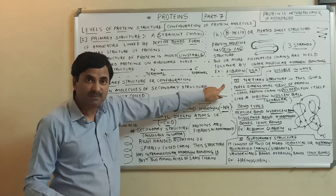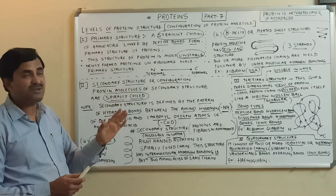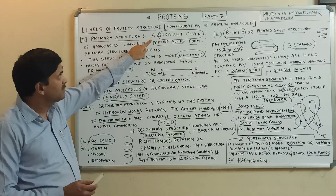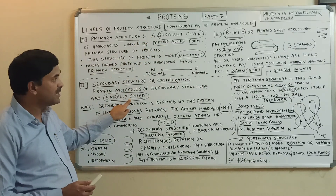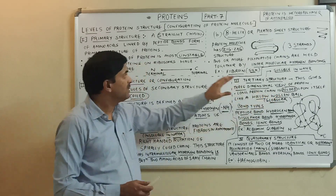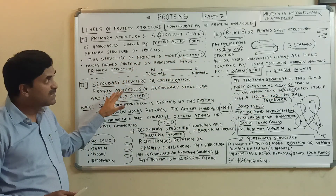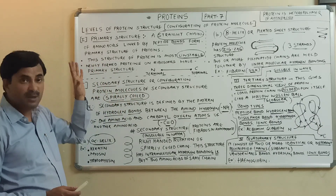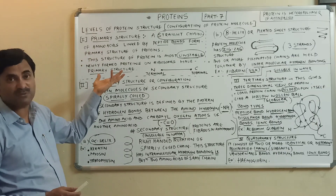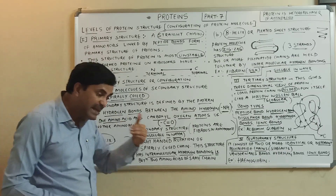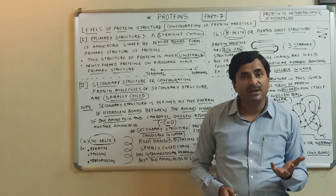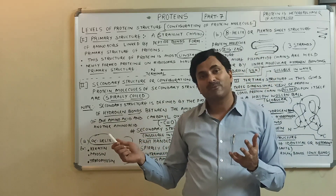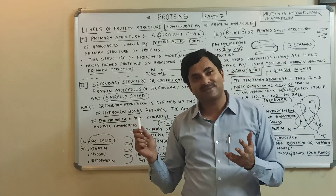To summarize: maximum proteins found in the protoplasm represent the tertiary structure. The major structures are primary (straight chain), secondary (spirally coiled), and tertiary (folded). In this video we discussed the different structures of proteins. In the next video we will deal with the types of proteins. Slides from this video are provided at the end. Thanks a lot.